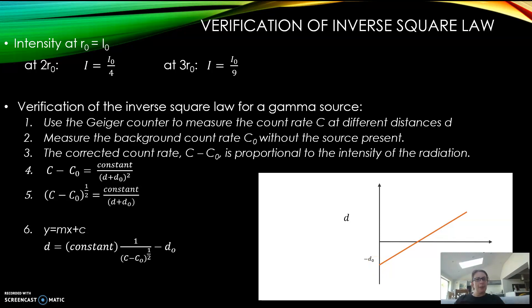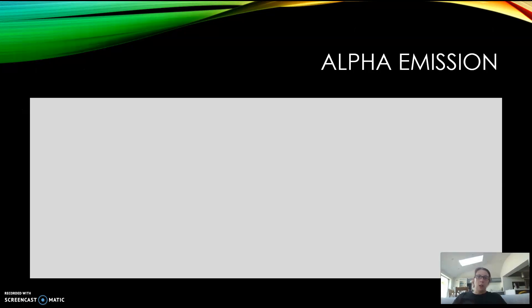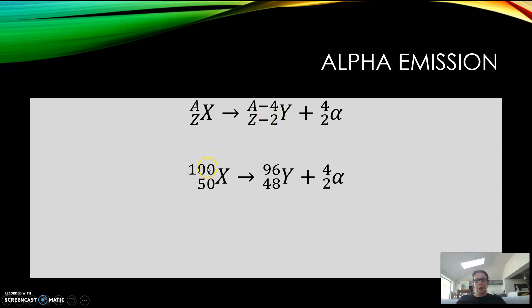Just as a reminder from the first topic, in alpha emission the alpha particle is ⁴₂α. If you have particle X, you take four away from the top number, two away from the bottom number, and it gives you your particle here. For example, 100 take away four is 96, and 50 take away two is 48. So your new daughter isotope is here, and then you have the ⁴₂α. As a check, 96 plus 4 makes 100, and 48 plus 2 makes 50.